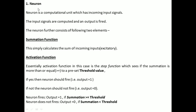The first component is Neuron. A neuron is a computational unit which is going to have incoming input signals. These input signals are computed and, basing upon these input signals, an output is fired. The neuron consists of two elements: the summation function and the Activation Function. The summation function calculates the sum of the incoming inputs, where these inputs are called excitatory inputs.